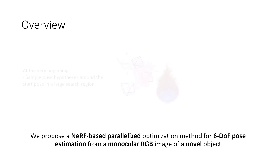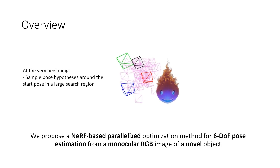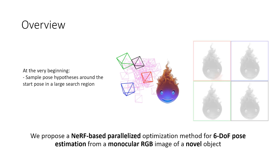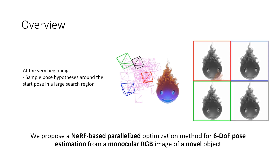At the very beginning, we sample pose hypotheses around the start pose in a large search region. Here in the middle, we display a set of pose hypotheses where four of them are highlighted with different colors. Their corresponding views are rendered in color on the right.